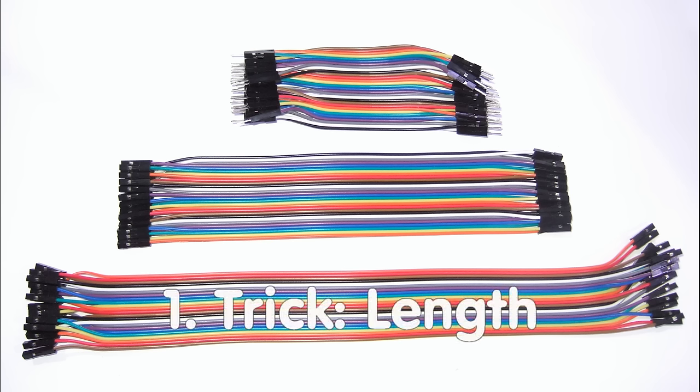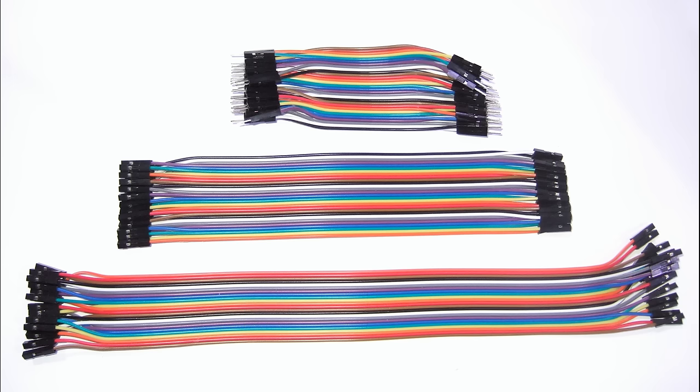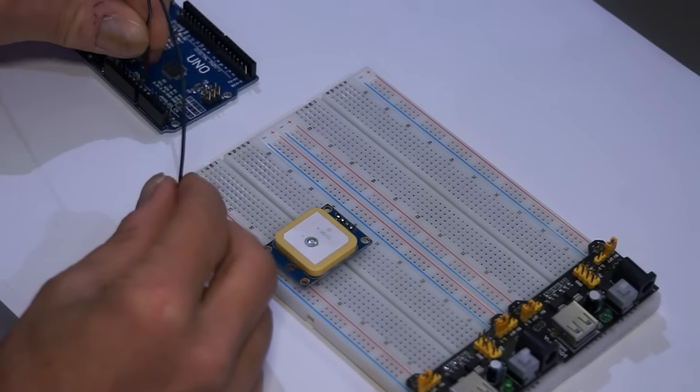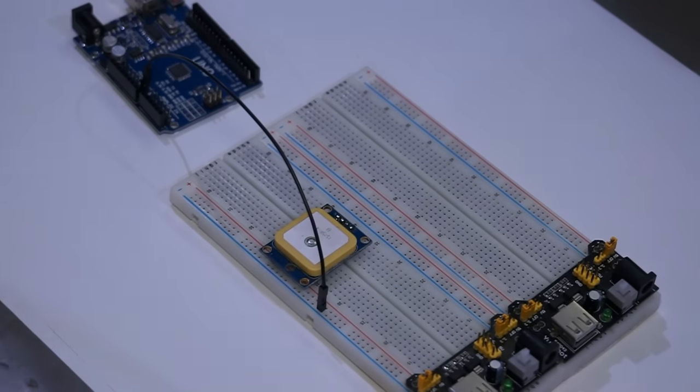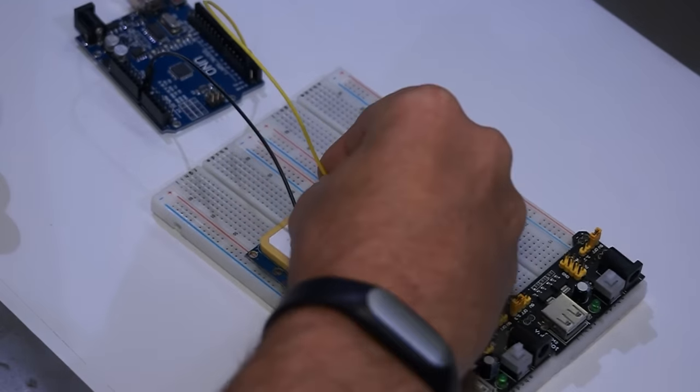First trick: Length. You can buy them in three lengths: 10, 20, and 30 centimeters. I use all of them. If I have to connect a normal Arduino board with parts on my breadboard, I need longer wires.